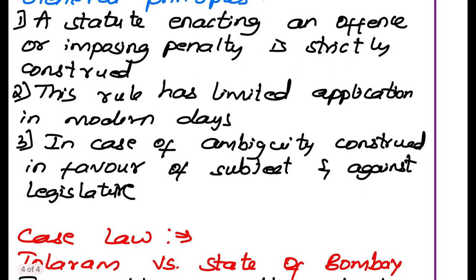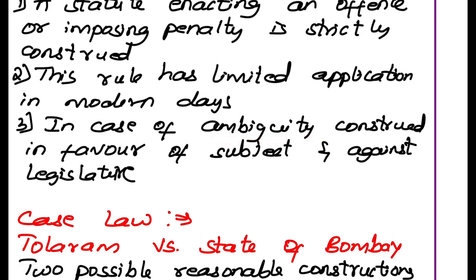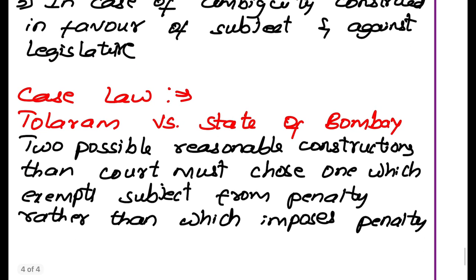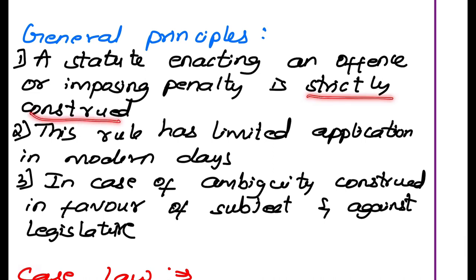Strict construction of penal statutes has limited application in modern days. In cases of ambiguity — where there are two or more explanations — courts can decide in favor of the subject against the legislature. Case law: Tolaram versus State of Bombay. It was held that if there are two possible reasonable constructions, then the court must choose the one which exempts the subject from penalty rather than the one which imposes penalty. That is why strict construction of penal statutes has limited applicability in modern days.